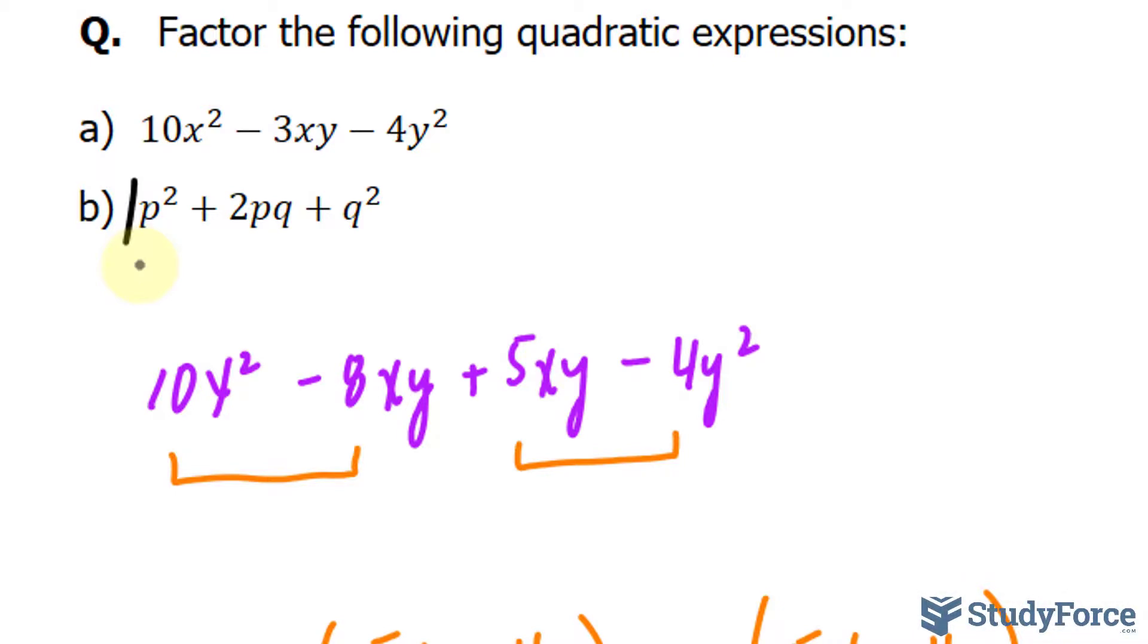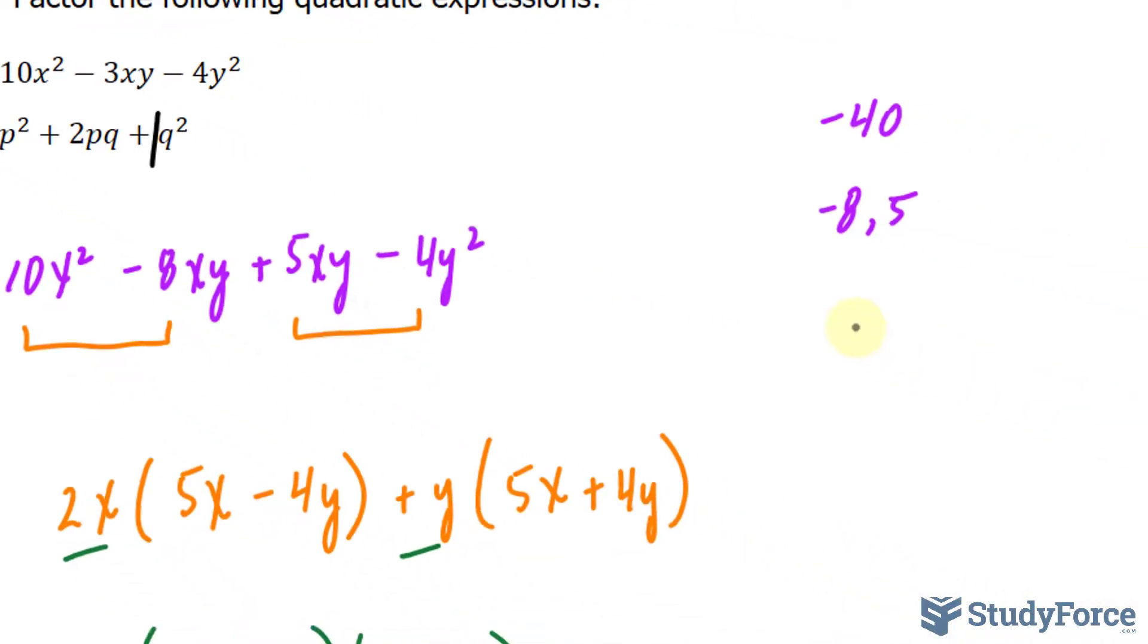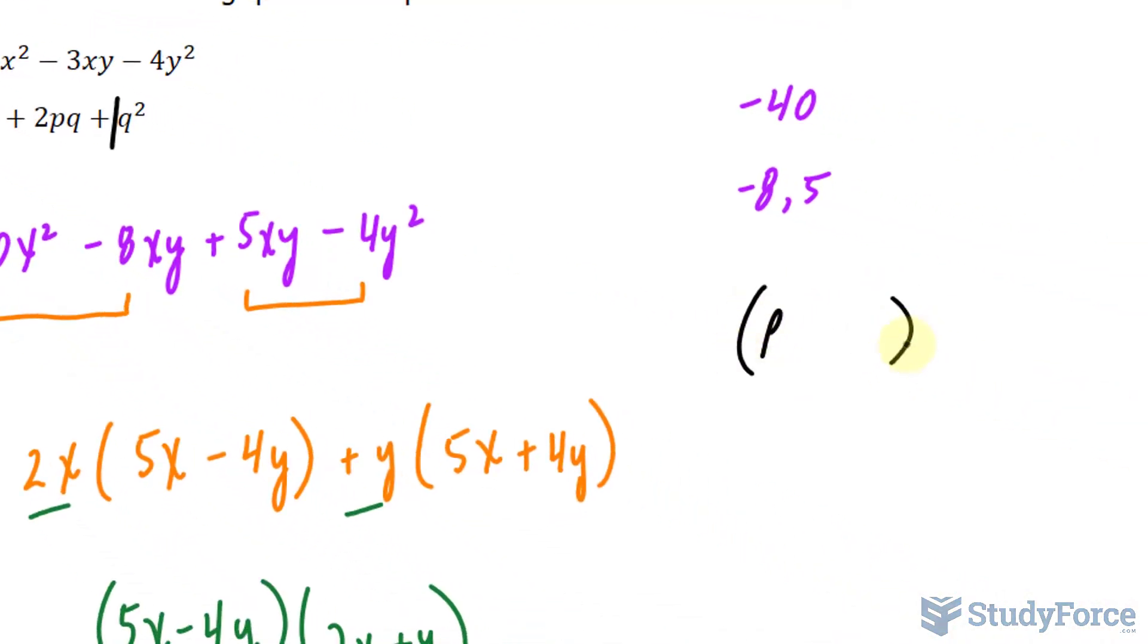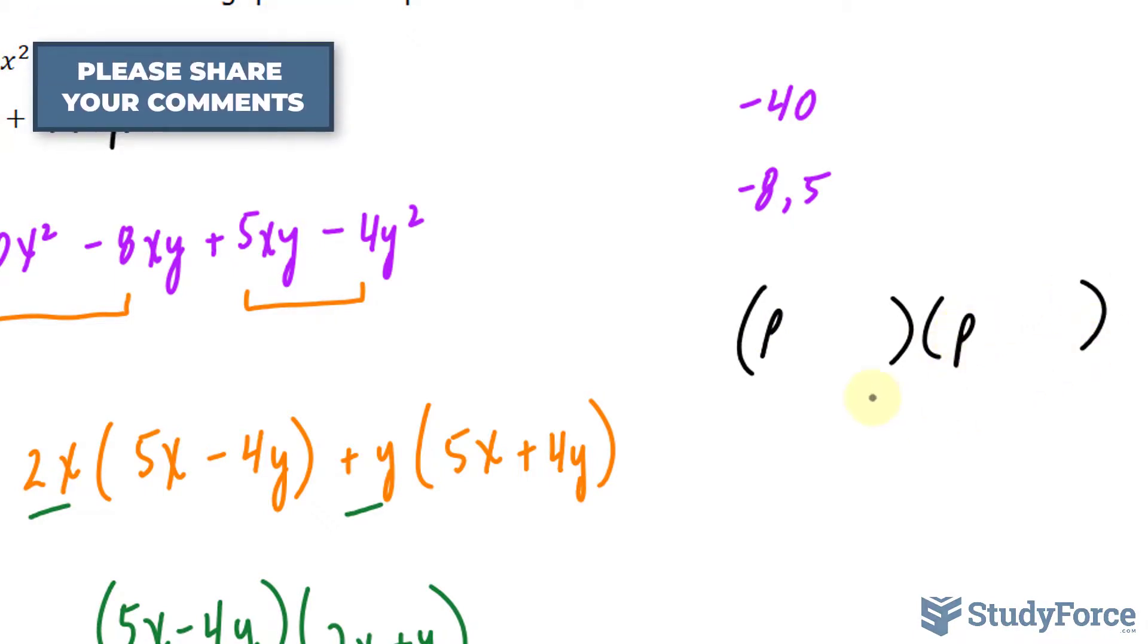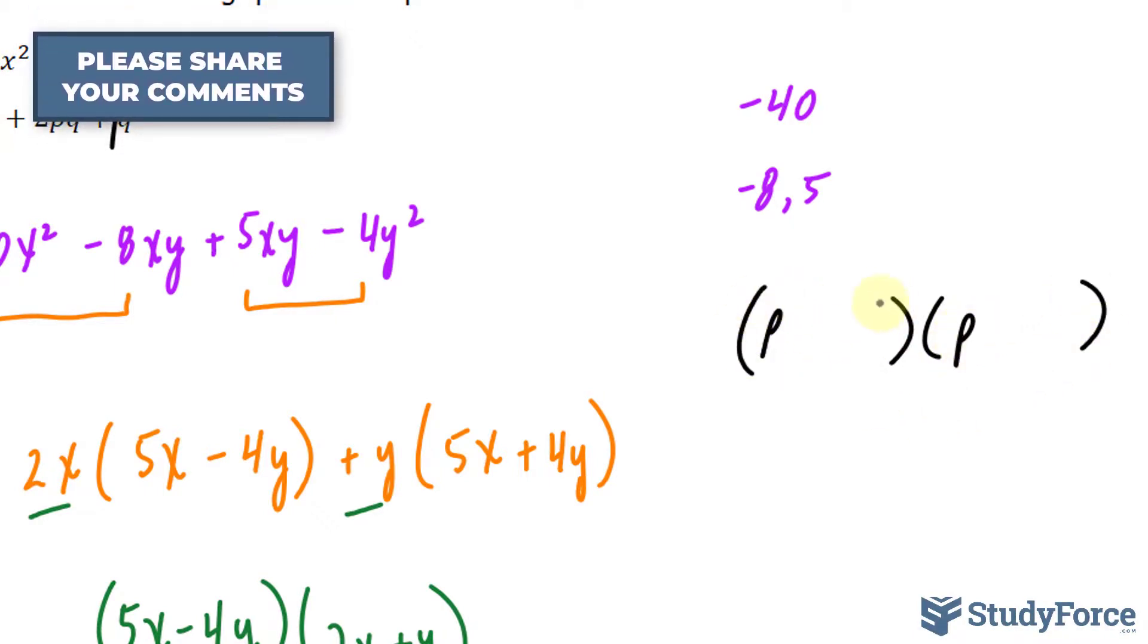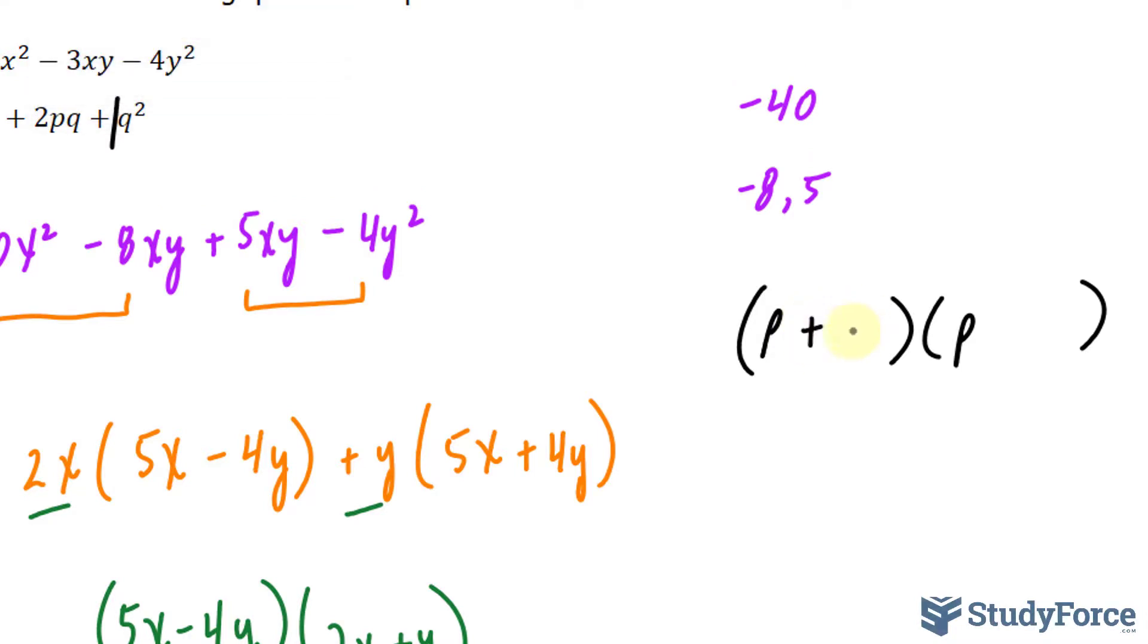So we can try to factor this by trial and error. What two numbers multiply to this coefficient of 1 and add to 2? So think of two numbers that multiply to 1 and add to 2. I'm thinking of 1 and 1. And because of that, we can write down p as the first term in these two sets of parentheses plus q plus q, where the numbers that we found 1 and 1 are the coefficients of this q.